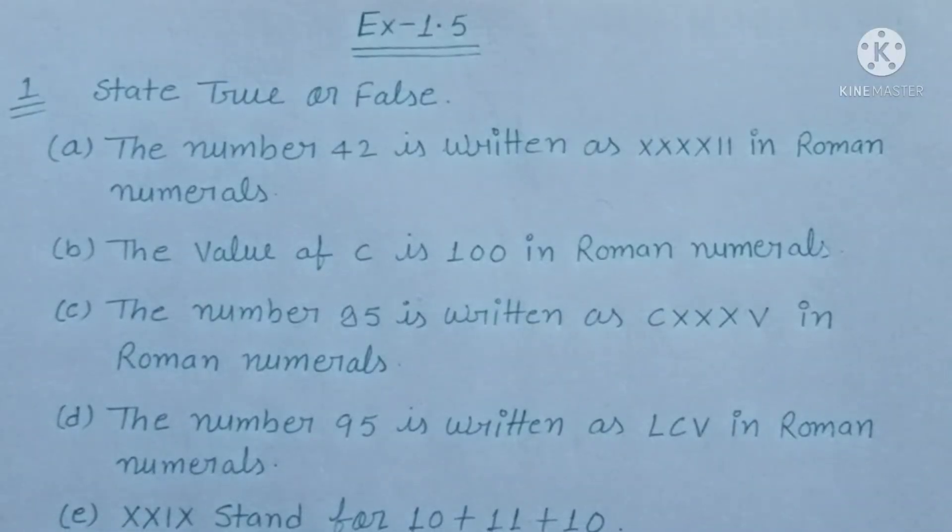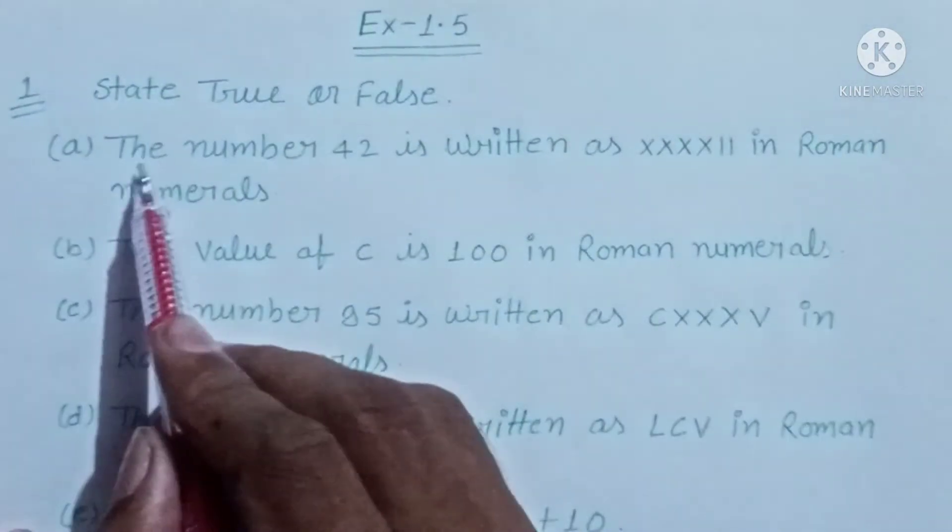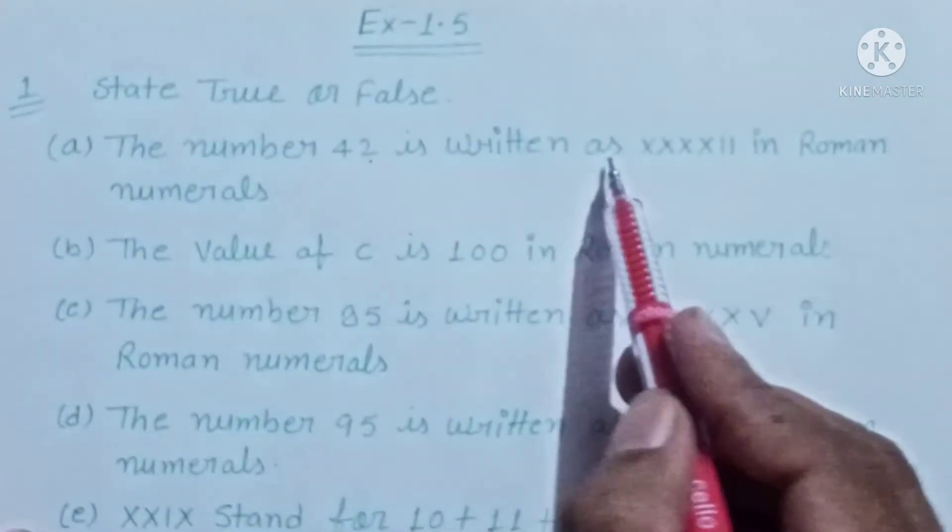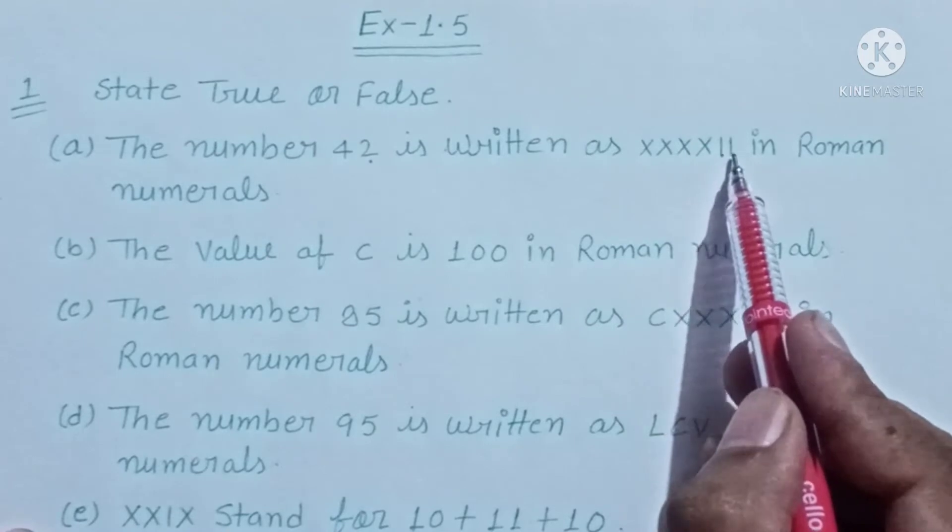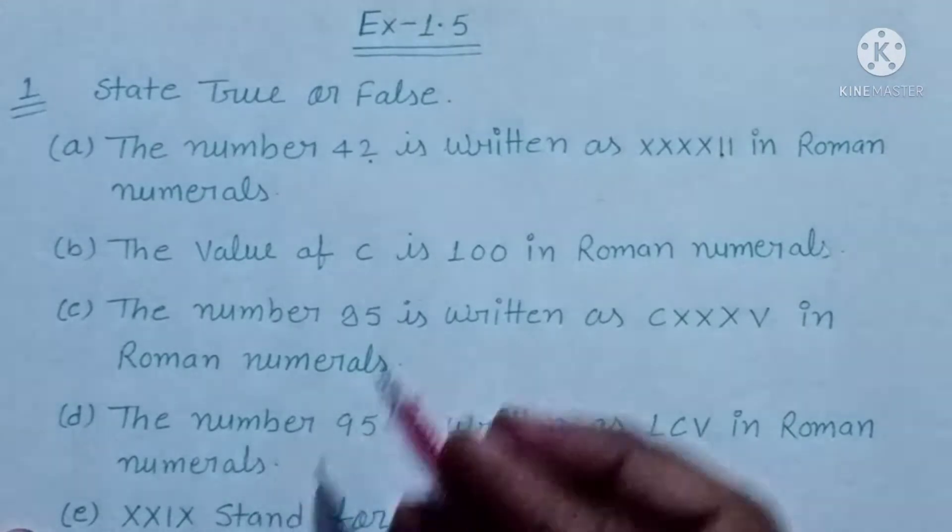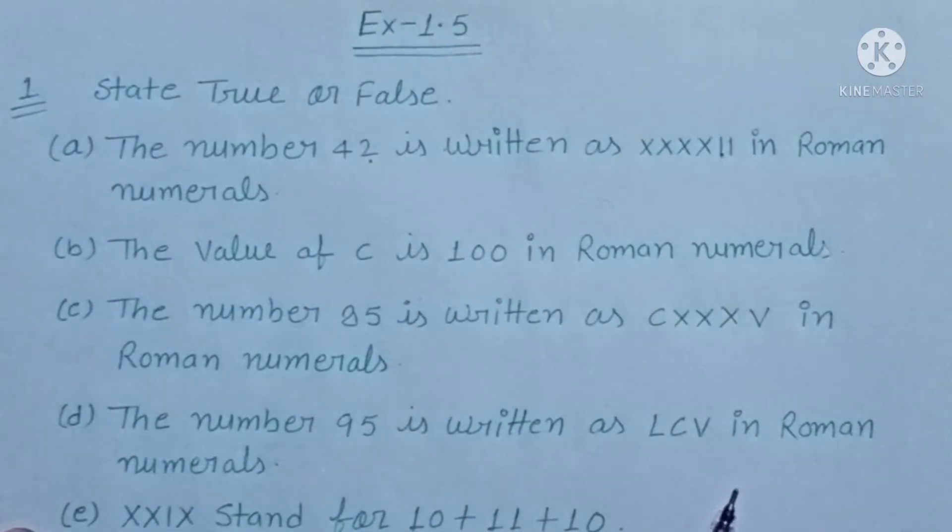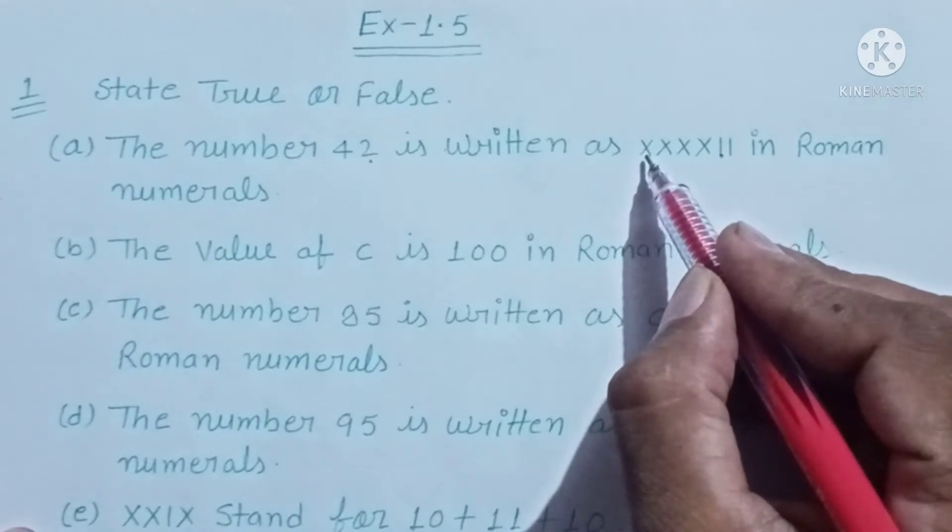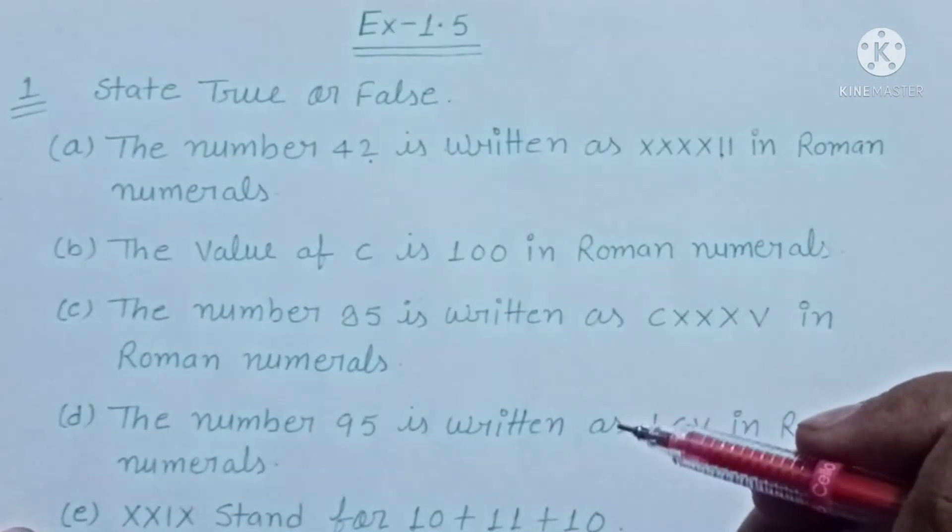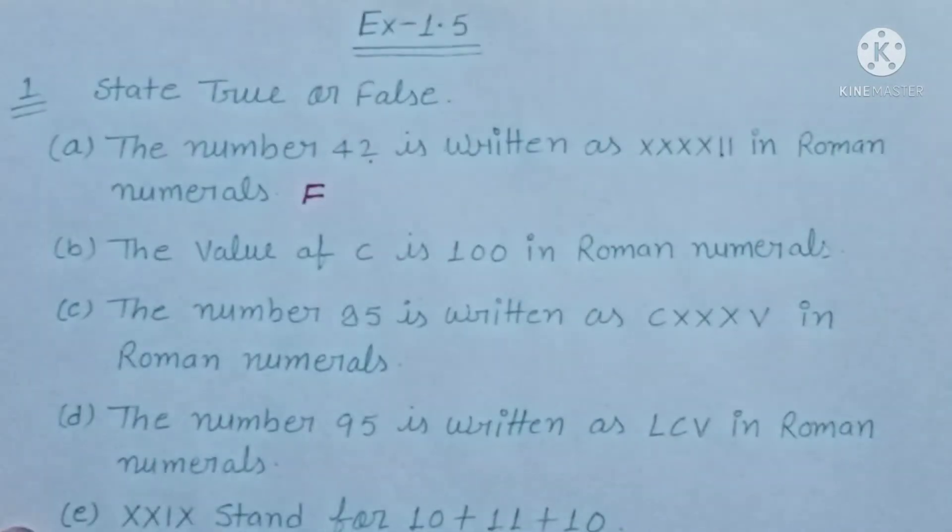First question is, the number 42 is written as XXXXII in Roman numerals. 42 equals XLII.